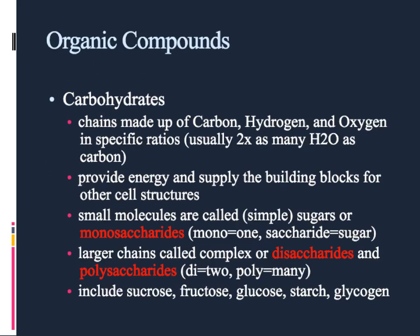Let's talk about organic compounds — hopefully these will sound familiar from when you studied biology. There are four organic compounds in your body that we're very concerned about. The first is carbohydrates. 'Carbo' refers to carbon, and 'hydrate' means water — so carbohydrates have three elements: carbon, hydrogen, and oxygen. Usually for every carbon, there's two hydrogens and one oxygen — that's the basic ratio.